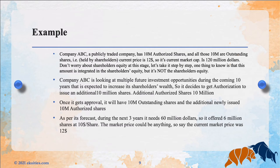Let's go over an example. Company ABC, a publicly traded company, has 10 million authorized shares, and all 10 million are outstanding shares held by shareholders. The current price is $12, so its current market cap is 120 million dollars. This amount is part of the shareholders' equity, but it is not the shareholders' equity.